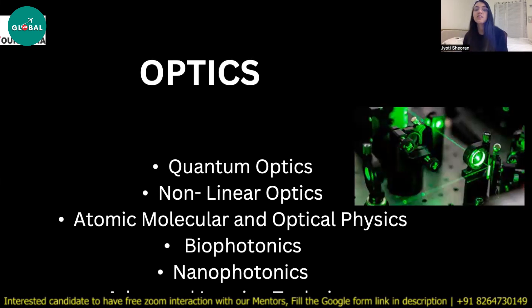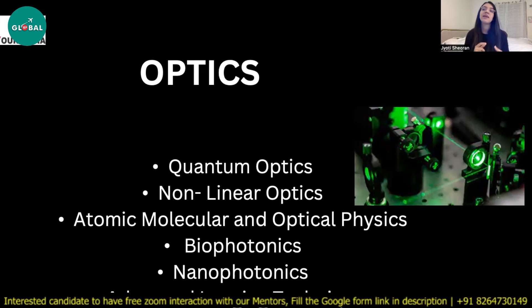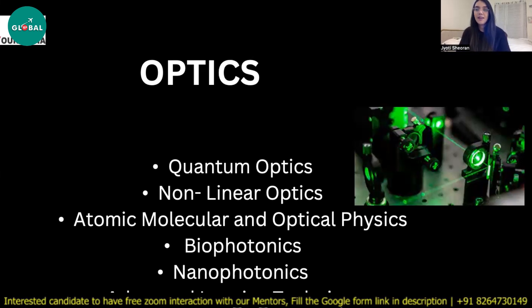Then there is atomic, molecular, and optical (AMO) physics, which is also a research area. Slightly newer areas include biophotonics and nanophotonics. There are also advanced imaging techniques — for example, X-ray or terahertz imaging — used to study diseases like cancer or for early detection of other conditions. Let me show you how many Nobel Prizes have been awarded in the area of optics.